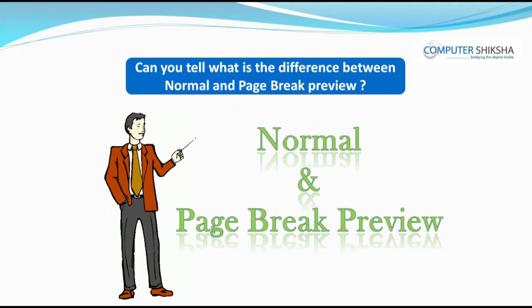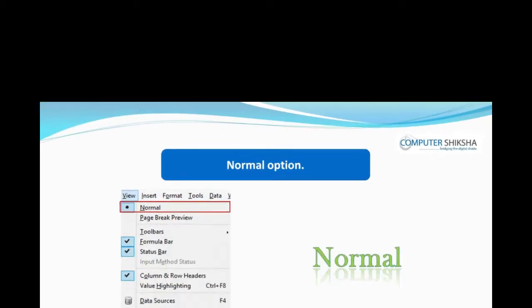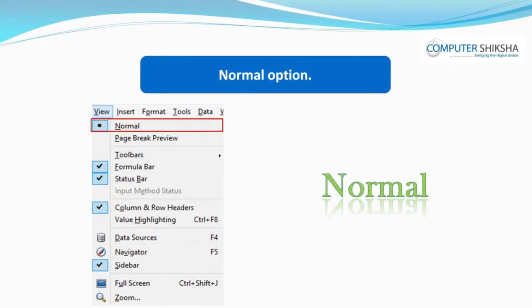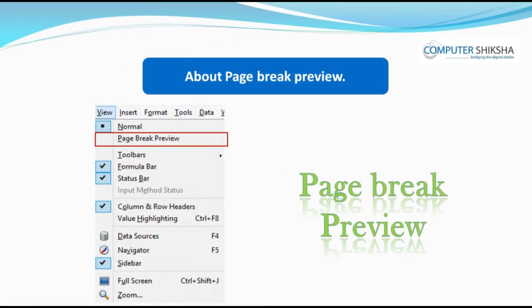Can you tell what is the difference between normal and page break preview? You can see your entire sheet in the normal view. Whereas in the page break preview, you can only see the sheet till where you have your data.